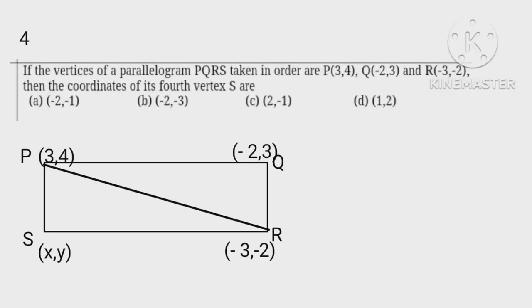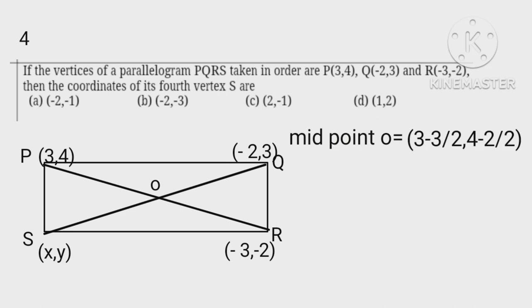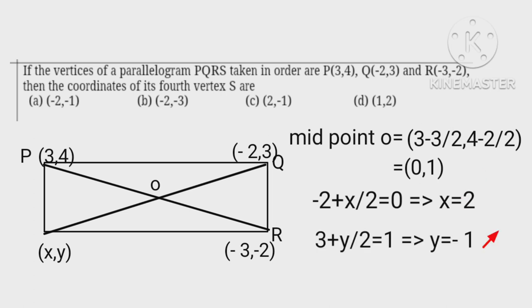Let the diagonals bisect at O. Midpoint O of PR equals the average of coordinates, which is 0, 1. Now minus 2 plus x over 2 equals 0 implies x equals 2, and 3 plus y over 2 equals 1 implies y equals minus 1. Hence S is 2, minus 1.